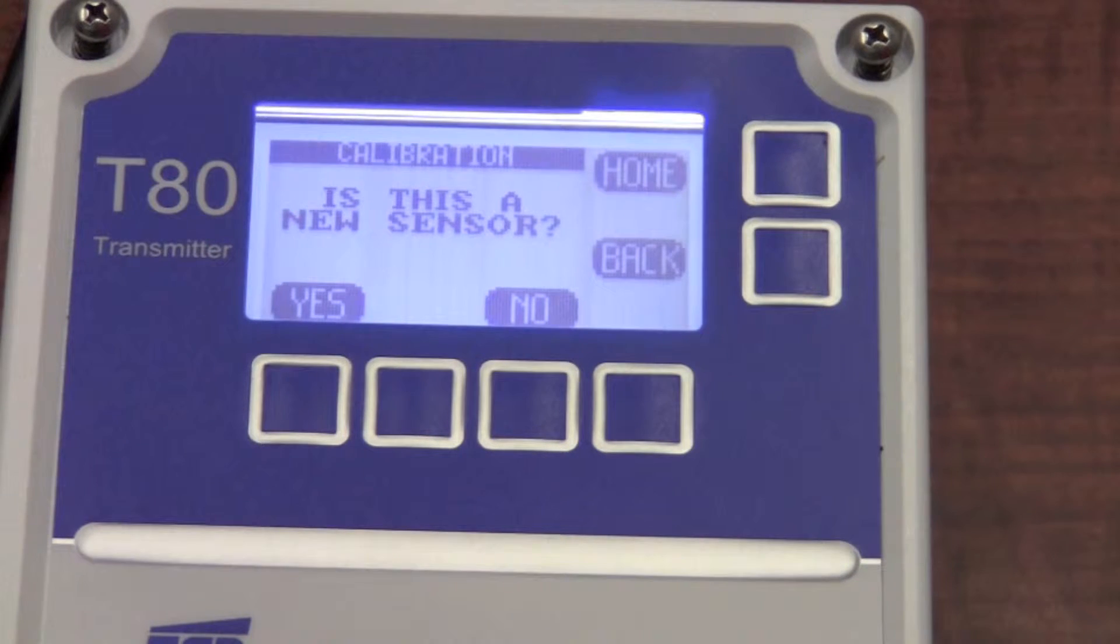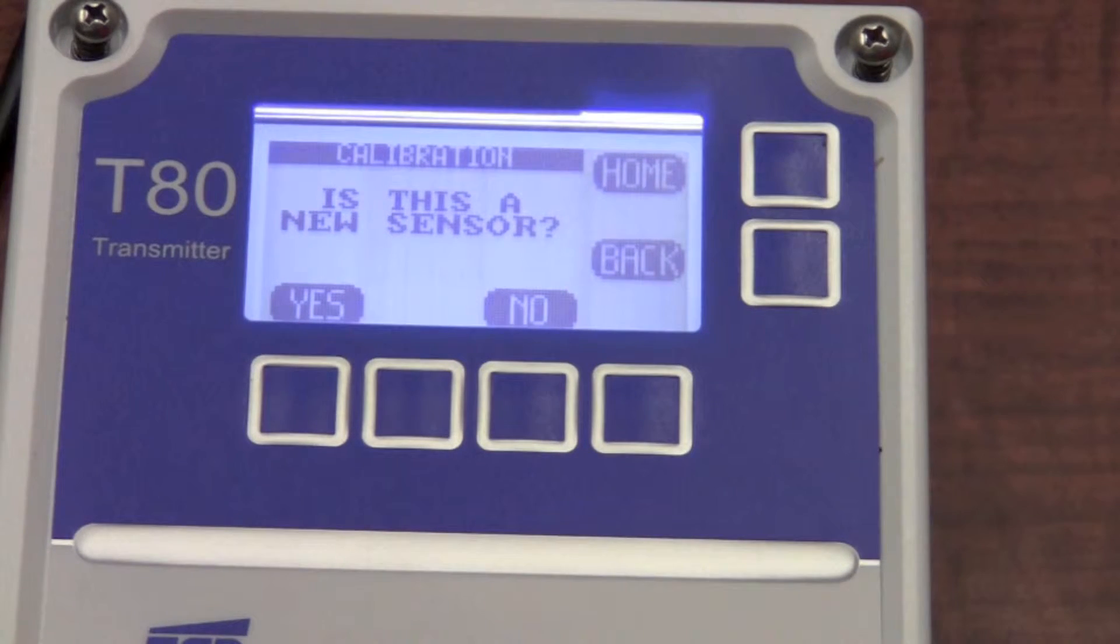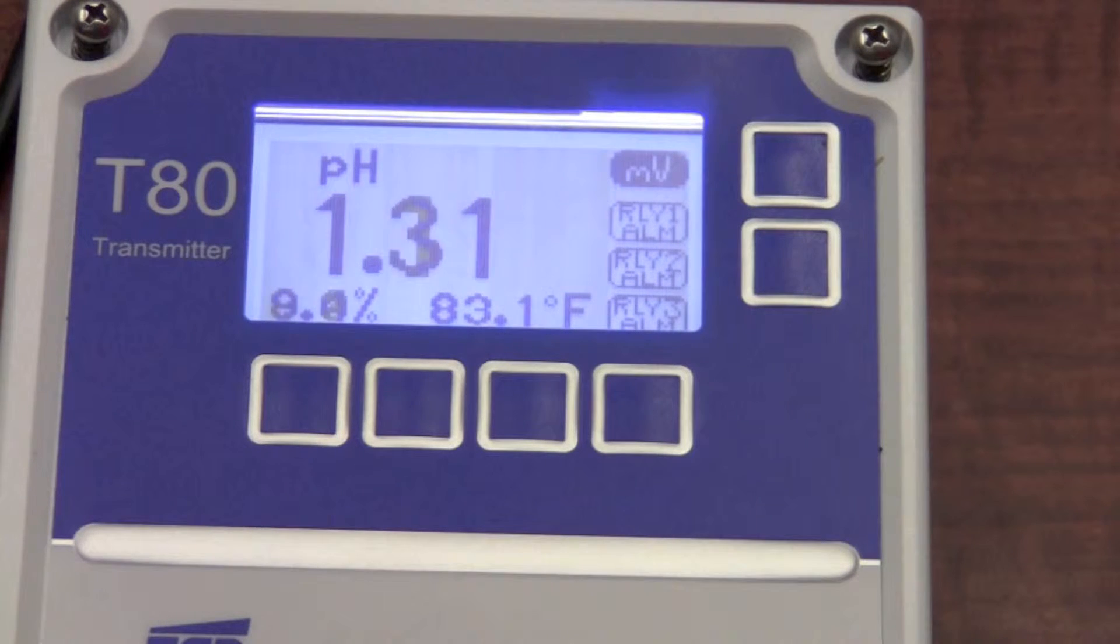The reason it asks this is because the S80 stores three calibrations. If you happen to find out that you had a bad buffer solution or something along those lines, you could always revert to one of the prior calibrations. In our particular case, this probe is not brand new, so I'm going to answer no. If I answer yes, it wipes out all three calibrations and would accept the one that I'm going to perform as the one and only.